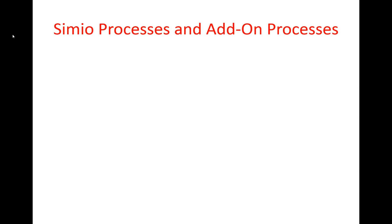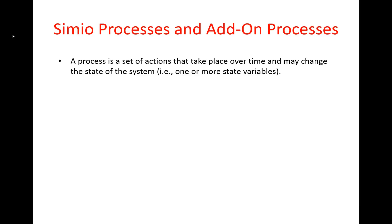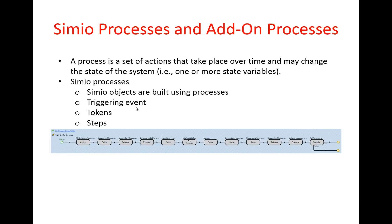The other important concept we need to understand is Simeo processes. In general, a process is a set of actions that happen over time during the simulation run and they can change the state of the system — in other words, they can change one or more state variables used to define the state of your system. Simeo processes have several characteristics. Each process has a triggering event associated with it, which is an event that basically executes the process. Tokens execute the process, and each process has one or more steps in it which are basically the actions that take place.